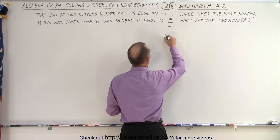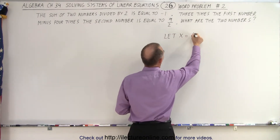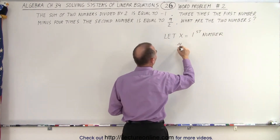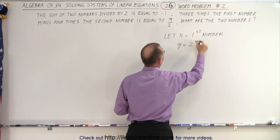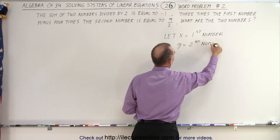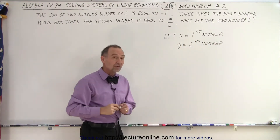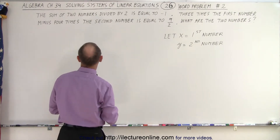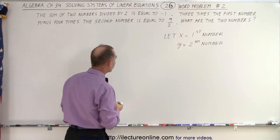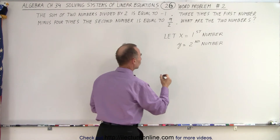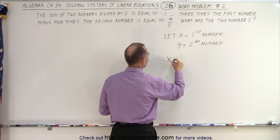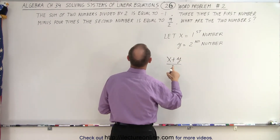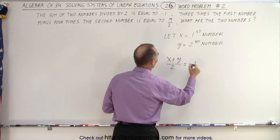Let x equal the first number, and y equal the second number. Now we need the two equations, which will come from what we've been given. The sum of two numbers divided by 2: that would be x plus y divided by 2, and that is equal to negative 1.